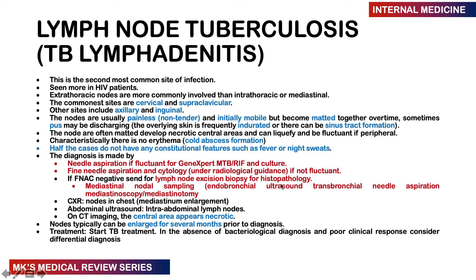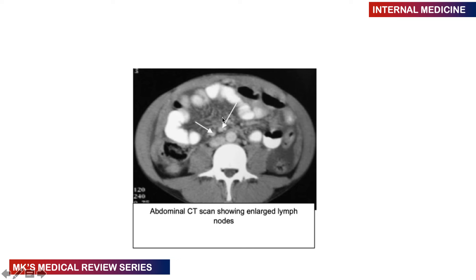Mediastinal node sampling can be done by endobronchial ultrasound-guided transbronchial needle aspiration, mediastinoscopy, or mediastinostomy. Chest X-ray may show mediastinal enlargement; abdominal ultrasound may show intra-abdominal lymph nodes; CT scan may show central necrotic areas within lymph nodes or para-aortic lymph nodes. Lymph nodes can be enlarged for several months before diagnosis. Start patients on TB treatment even in the absence of bacteriological diagnosis; if there is poor clinical response, investigate for lymphoma, as symptoms overlap.